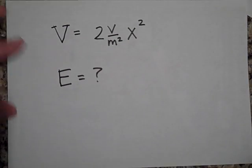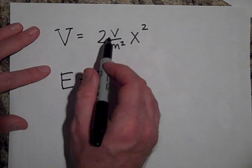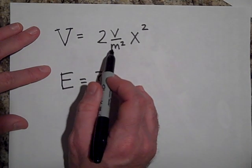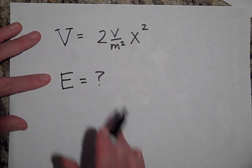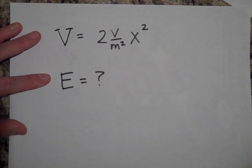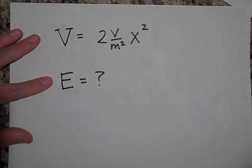So knowing that, could you tell me if I know that the voltage is two volts per square meter x squared - that's the function. What is the electric field? Go ahead and pause and see if you can figure out what the electric field would be. The magnitude.